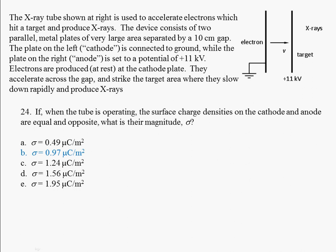Now we're asked to figure out what type of surface charge densities would be required at these plates here if we wanted to get an 11 kilovolt potential difference in just a distance of 10 centimeters.